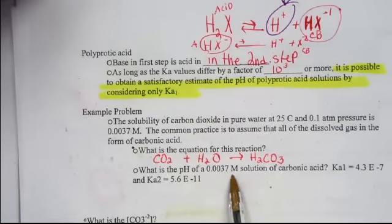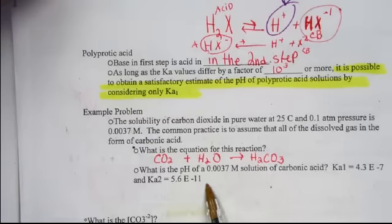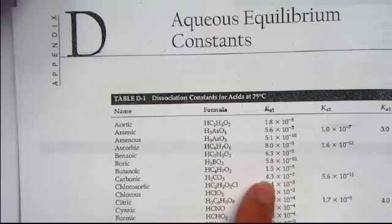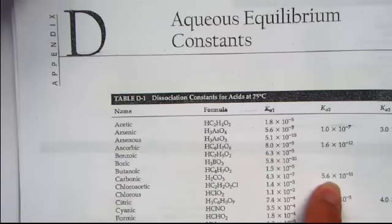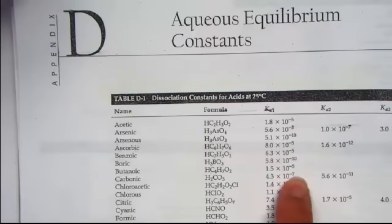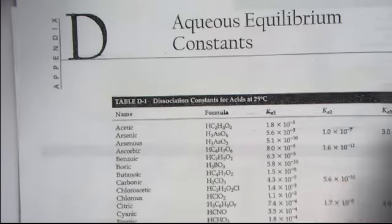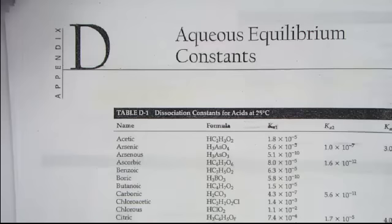What's the pH of our solution? They're giving us the Ka1 value and the Ka2 value for carbonic acid. Ka1 for carbonic acid is 4.3 times 10 to the negative 7th. Ka2 is 5.6 times 10 to the negative 11th. What I'm noticing, the magnitude of Ka1 compared to Ka2 meets the criteria of having a difference of 10 cubed or more. In other words,